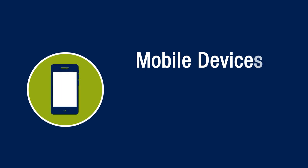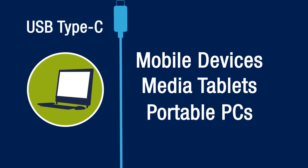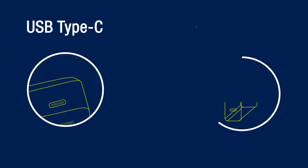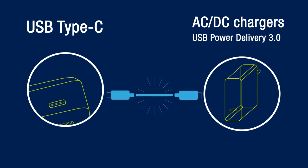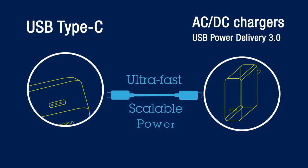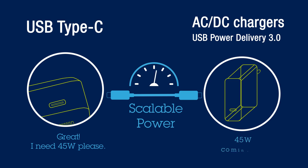Are your mobile devices, media tablets, and portable PCs equipped with Type-C connectors, and you need to design a modern AC-DC charger supporting the USB PD communication protocol? You know that modern ultra-fast chargers and power adapters, compliant with the latest version 3.0 of the USB power delivery specification, must be able to negotiate the voltage and the current over the USB power pins to ensure scalable power levels with the highest efficiency.